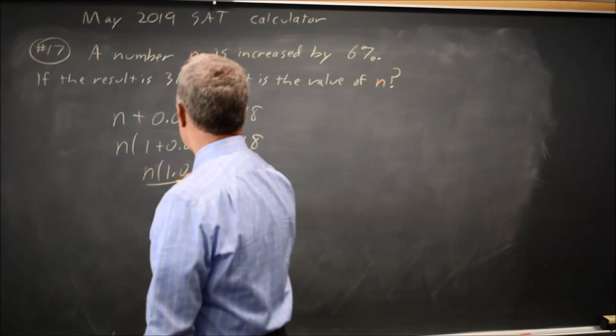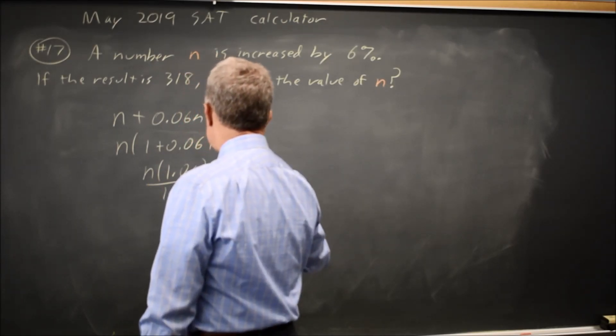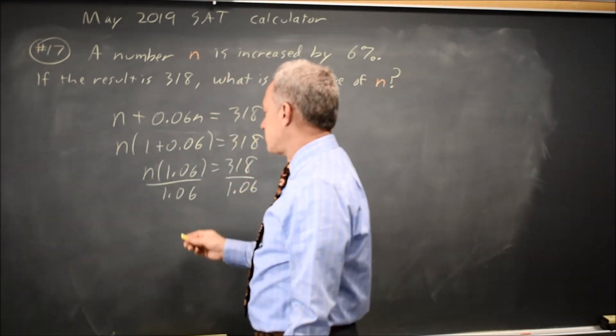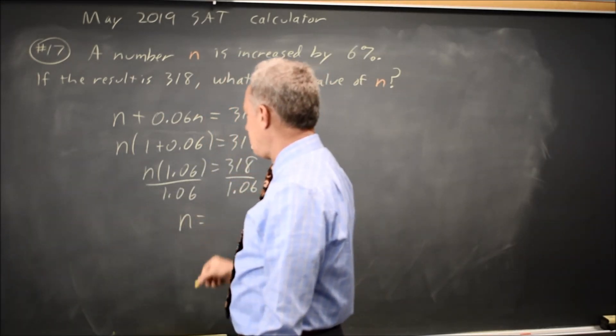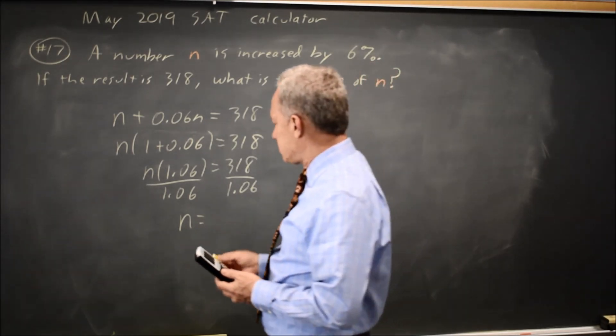To solve for n, we divide both sides by 1.06. Since n is multiplied by 1.06, we divide by that number and get n equals 318 over 1.06 is 300.